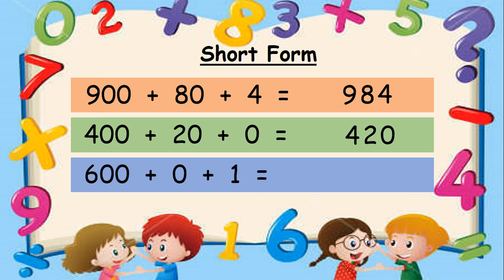Tell me the short form of this expanded number. At the hundreds place, we will write 6. At the tens place? No tens, so we will write 0. At the ones place? Yes, 1. Super, my kids! I hope now you have understood how to write the short form.